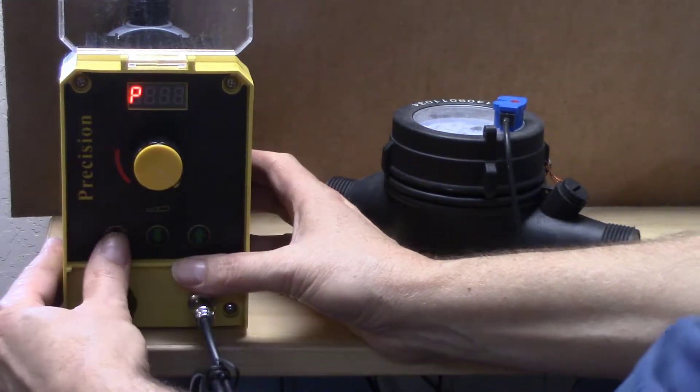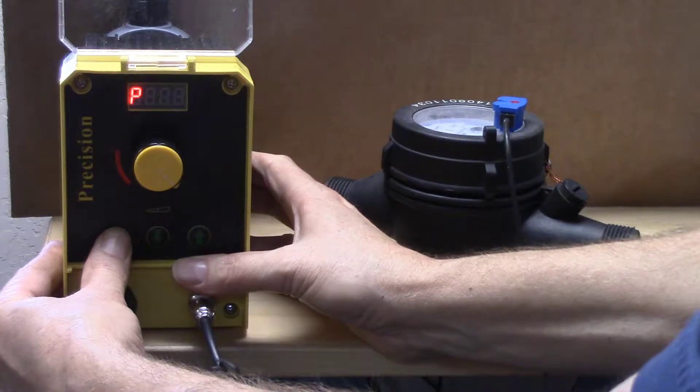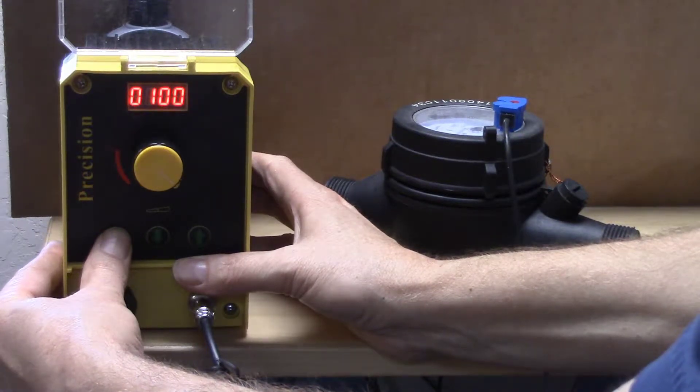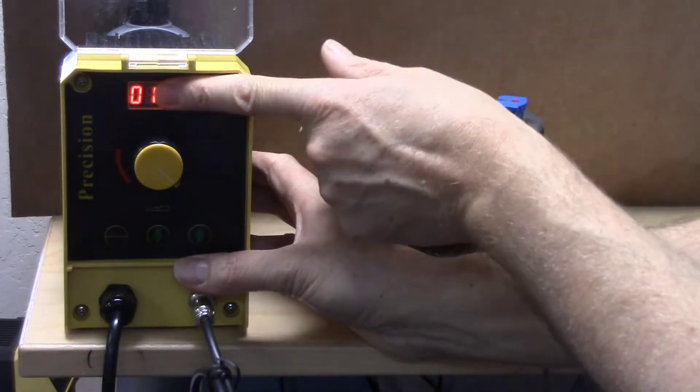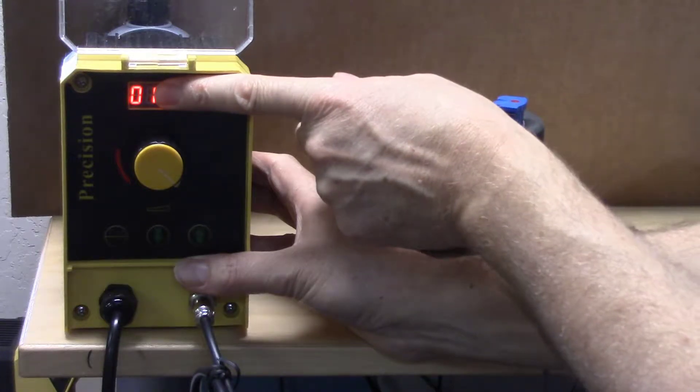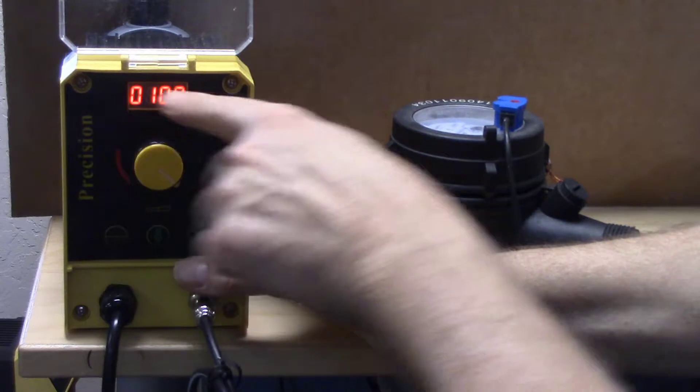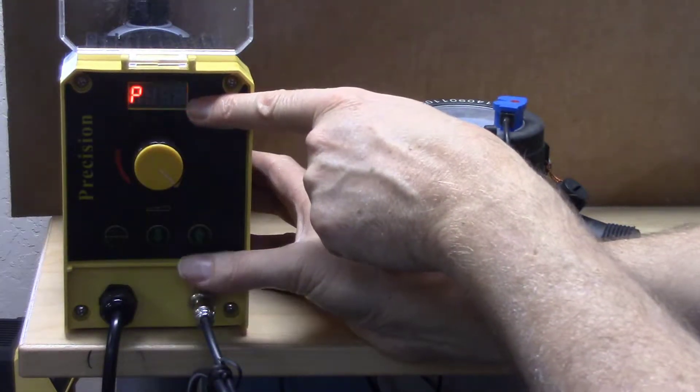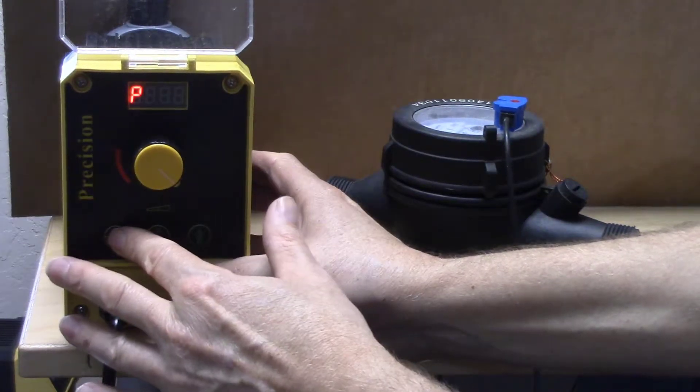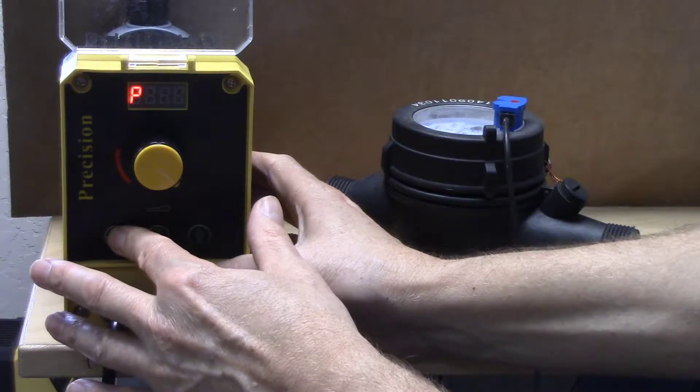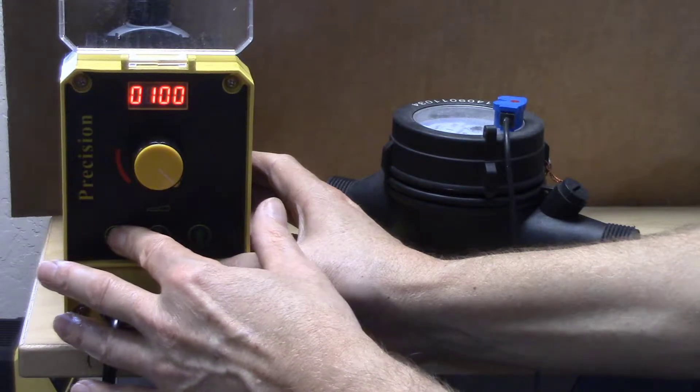The programming parameters—there are five, labeled zero through four. So zero, one, two, three, four is five different parameters. Parameter zero is for when you're in manual mode; it tells you what percentage the pump speed is on.